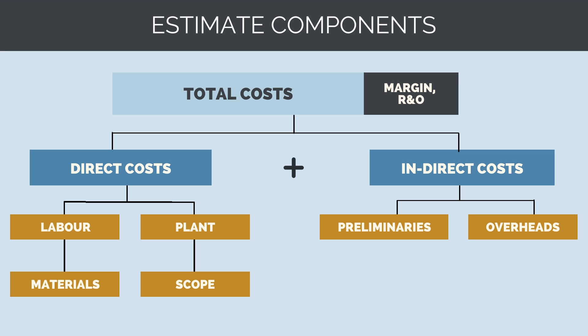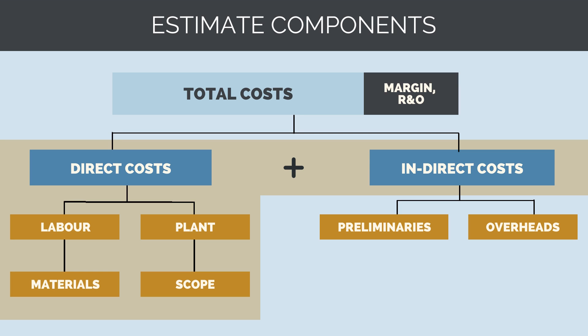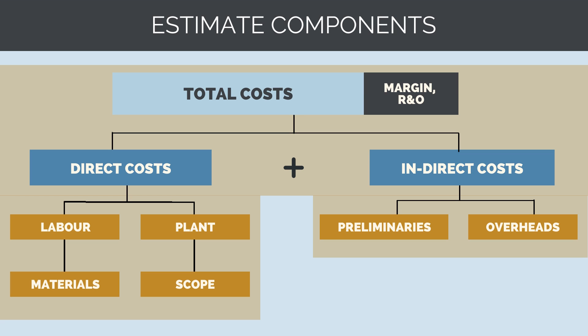A project's total costs are made up of direct and indirect costs. To calculate direct costs, we need to work out the labour, plant, material and subcontract costs it will take to complete all the construction deliverables. Indirect costs are all the other things we'll need in place to ensure the works get done, like management staff, site huts, security fencing and so on. Combine these together and we get our total project costs, to which we can add our risk and opportunity, margin and corporate overheads to get the price submitted to the client.